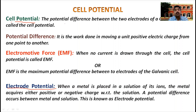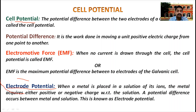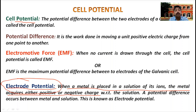We also discussed electrode potential. When we dip an electrode in a solution of its ions, the electrode will acquire either a positive or negative charge based on the electrolyte. There will then be a potential difference between the electrode and the electrolytic solution, and this potential difference is known as electrode potential. Now we will discuss the magnitude of electrode potential.